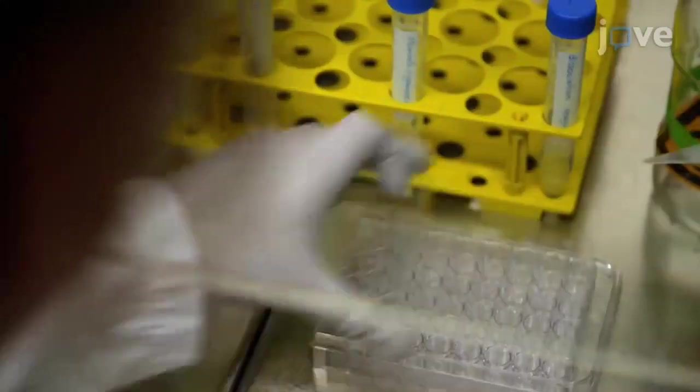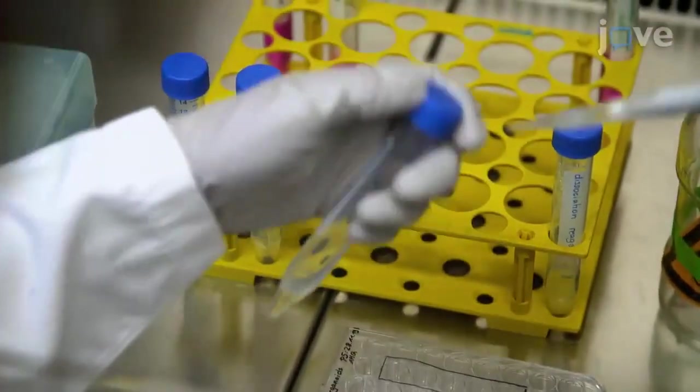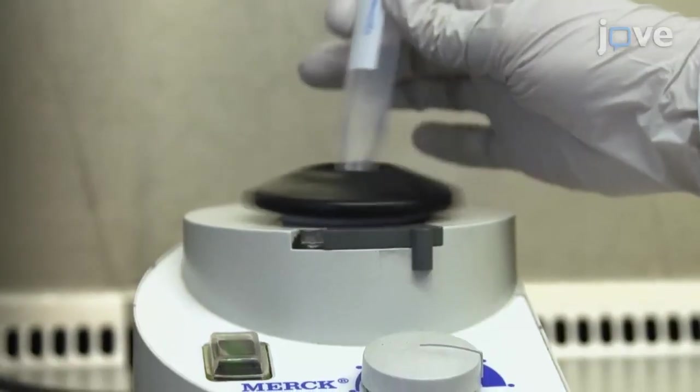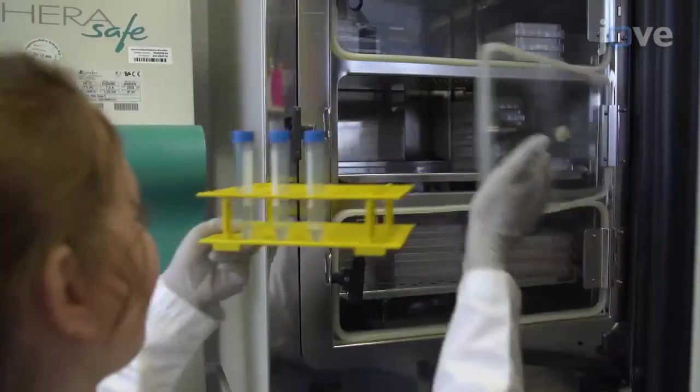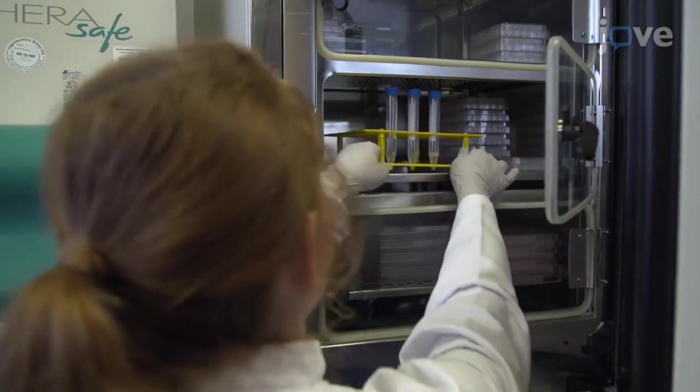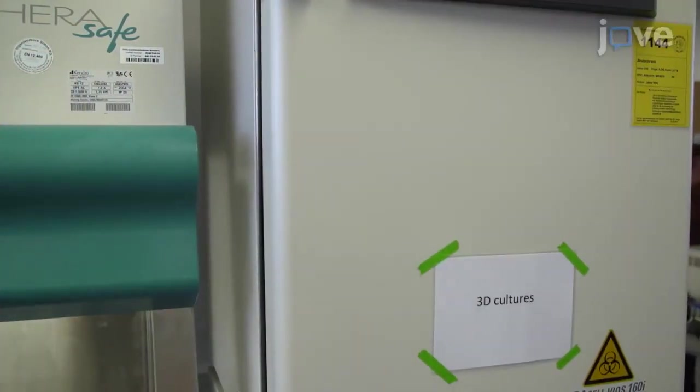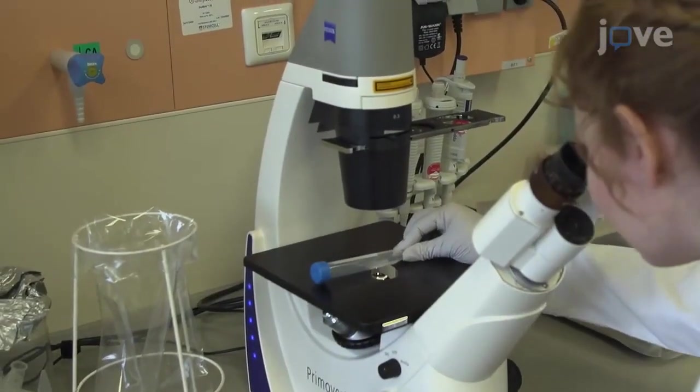Pool 5 wells per electroporation sample into one 15 milliliter tube. Mix the contents of the tube by vortexing and incubate it for 5 to 15 minutes at 37 degrees Celsius until clusters of 10 to 15 cells occur, checking the dissociation with the microscope.